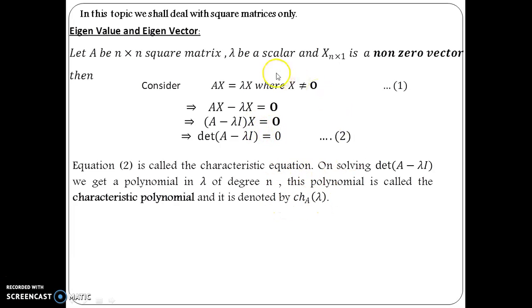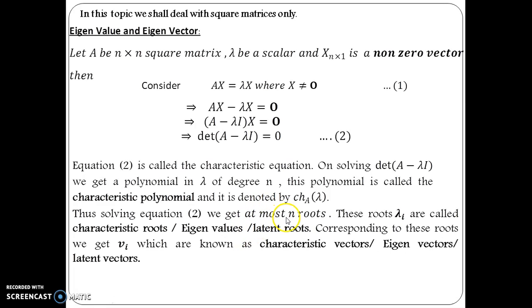Now, when you solve this characteristic equation det(A - λI) = 0, we get at most n roots. And these roots are λ_i's and these are known as eigenvalues. There are three names for eigenvalues: characteristic roots or latent roots.